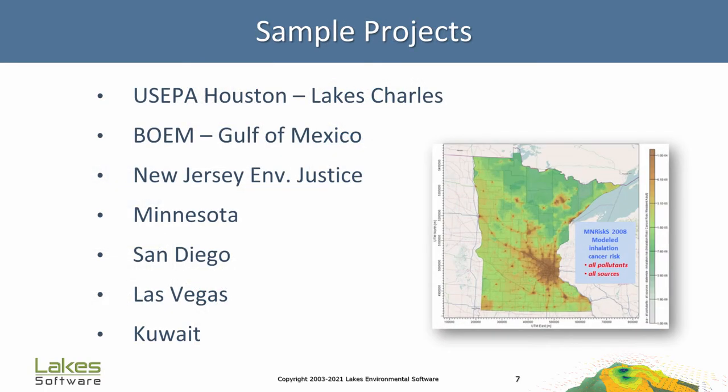Projects can span different domains, including local areas, whole-state projects like Minnesota — who uses AQMIS to conduct risk assessments for every facility in the state — regional-scale efforts like the Gulf of Mexico for the U.S. Department of Interior, and even entire countries, like projects in Kuwait and Qatar.